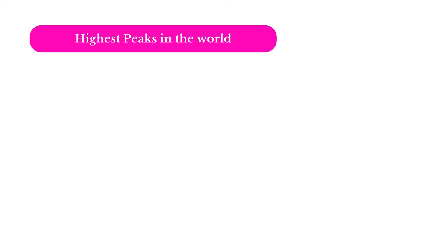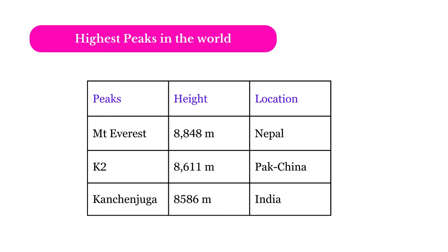The highest peaks in the world: Mount Everest at 8848 meters is located in Nepal; K2 at 8611 meters is located between Pakistan and China; and Kanchenjunga at 8586 meters is located in Sikkim, India. Mount Everest is the highest peak in the world, and Kanchenjunga in Sikkim is the highest peak in India.